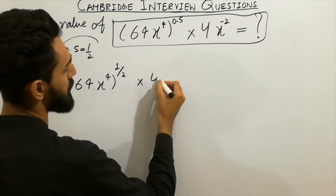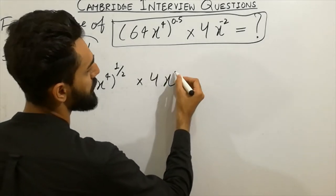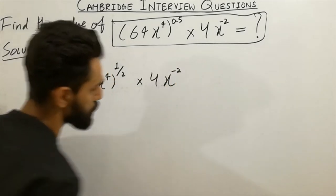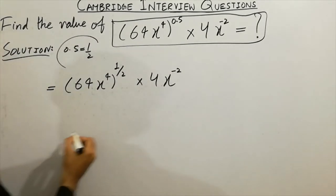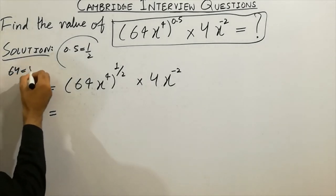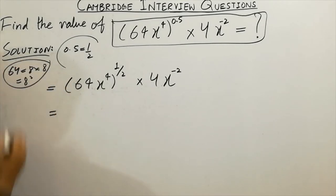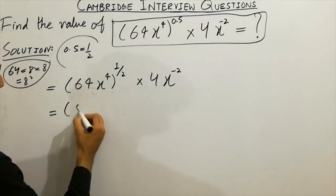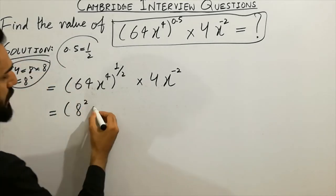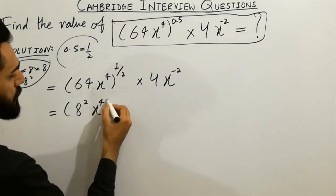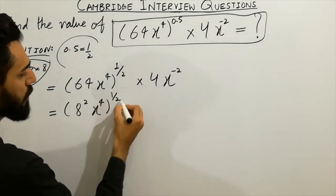Here, multiplied by 4x^(-2). Next step: 64 is equal to 8². So you can write here 8 squared. Then we have (8²x^4)^(1/2) × 4x^(-2). Very short. Next step...